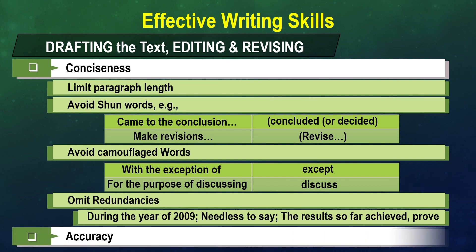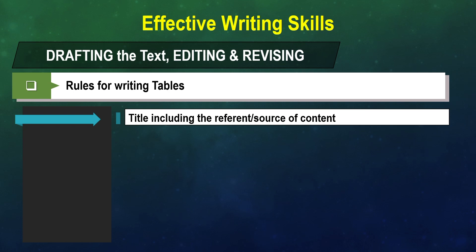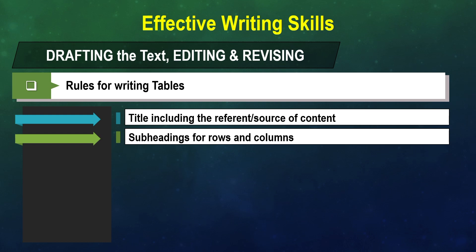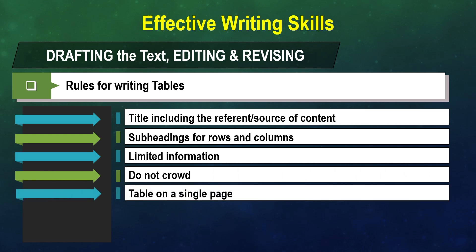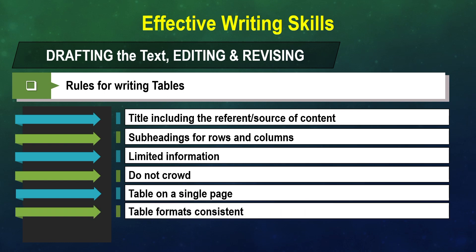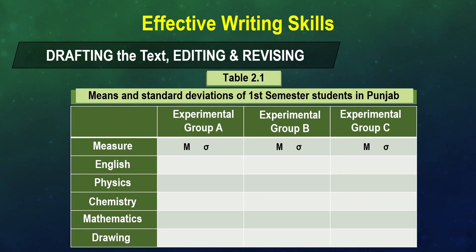Check for accuracy — ensure the material you are including is accurate. When including tables in a self-learning material, follow some rules: always have a title including the referent or source of content; include subheadings for rows and columns; keep it uncluttered with limited information per table; fit the table on a single page; maintain a consistent table format; and use horizontal lines to set off the headings. For example, a table titled 'Means and Standard Deviations of First Semester Students in Punjab' with clearly labeled rows and columns demonstrates this uniformity.